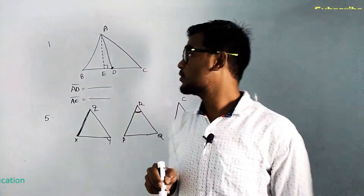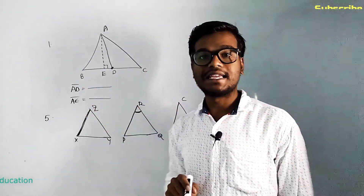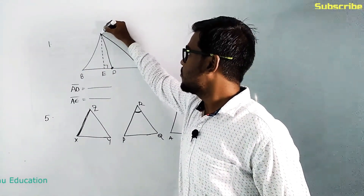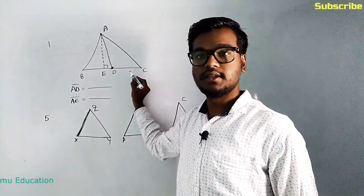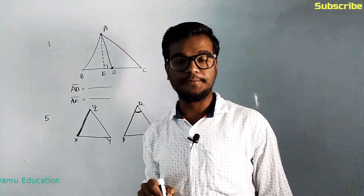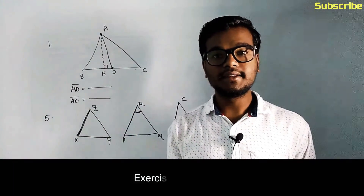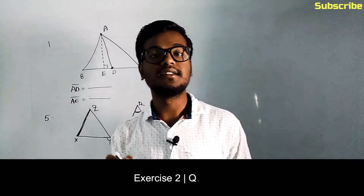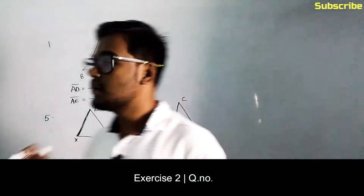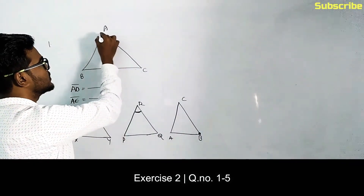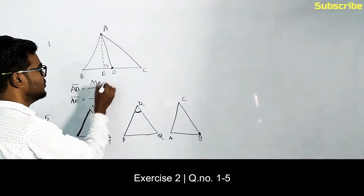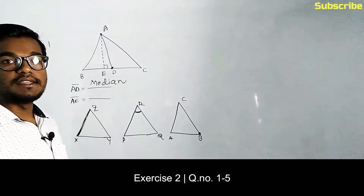What is AD significant? AD goes from vertex A and joins the midpoint of BC, so D is the midpoint of BC. AD is nothing but the median. A median is the line from any vertex joining to the midpoint of the opposite side. So AD is a median because it starts from one vertex and joins the midpoint of BC.